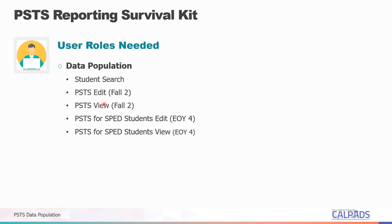Next is the PSTS view role to view PSTS records in the student details section of CALPADS for CTE completer students. For End of Year 4 submission, LEAs need the PSTS for SPED students edit role to submit PSTS files coming from the special education system vendor, which is pushed through the API containing PSTS data for special education students, as well as the PSTS for SPED students view role to view PSTS records in student detail for special education students.